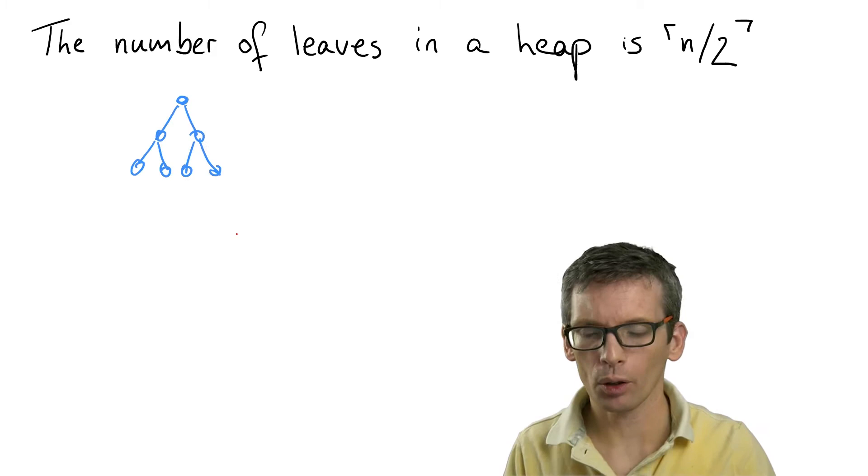Half of the nodes in a heap are leaves. Why is that the case? We can see that in the following way.